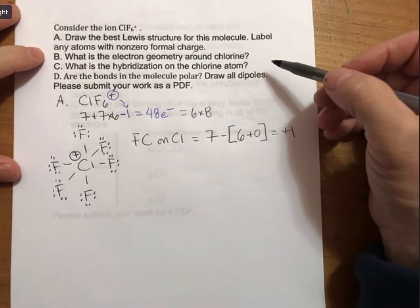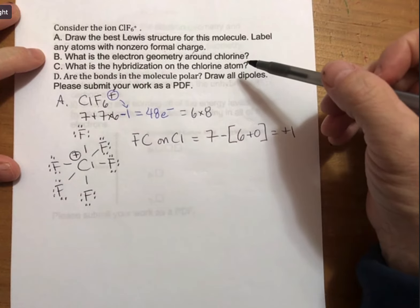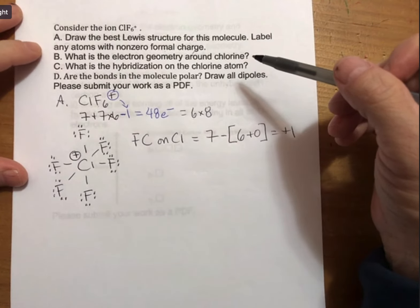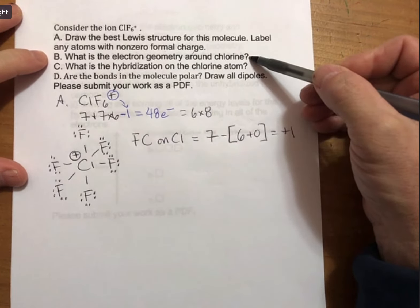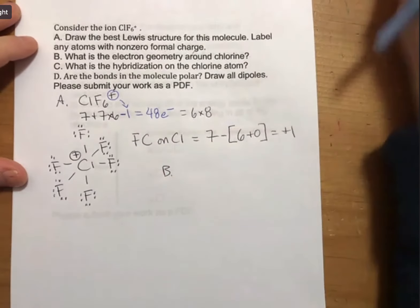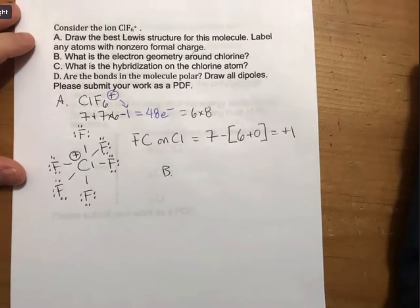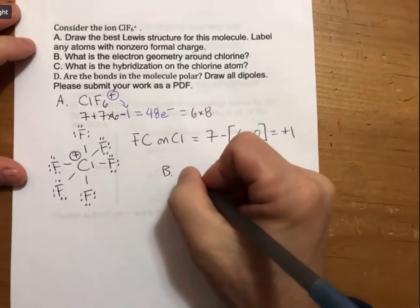Now, we've done a couple of these. So I'm going to let you guys tackle this and ask you, what is the electron geometry around chlorine? Can anybody tell me? Octahedral. Thank you, Kristin. Octahedral.